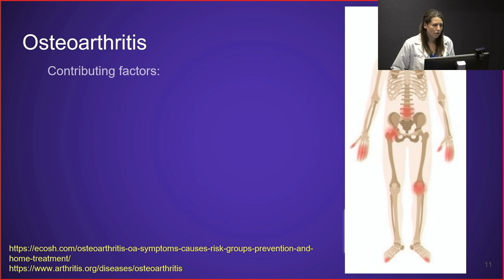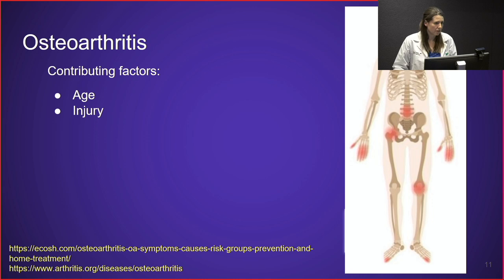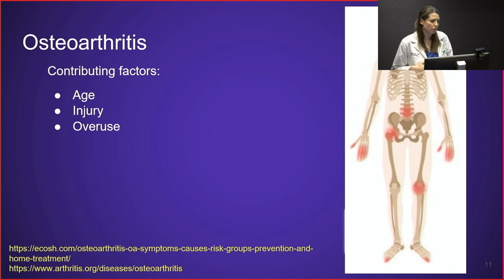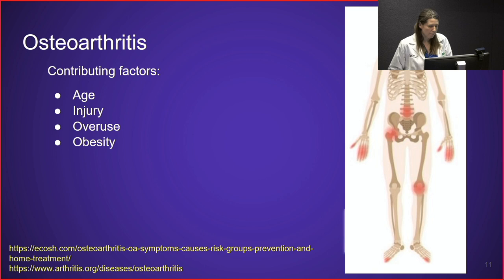There are several contributing factors to osteoarthritis. It tends to occur with age, often developing in people's 50s and 60s, though it can occur earlier after a joint injury. Overuse is another factor — people in labor-intensive jobs may develop it in the knees, hips, and spine. Obesity adds stress onto joints and increases risk, and fat cells associated with obesity are also inflammatory and can contribute to development.